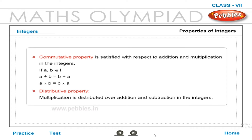Commutative property is satisfied with reference to addition and multiplication in the integers. If A, B belong to I: A + B = B + A, and A × B = B × A. Distributive property: multiplication is distributed over addition and subtraction in the integers.